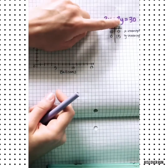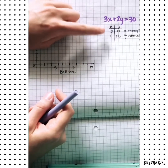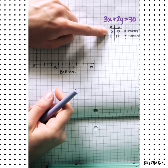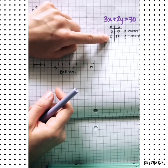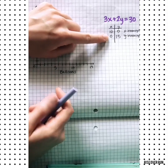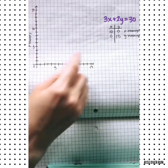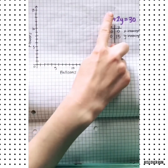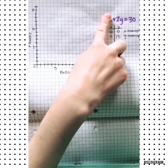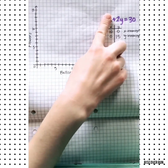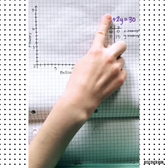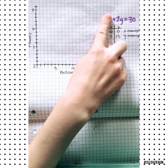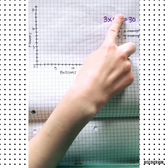So we plugged in 0 for Y to find the X intercept, and we plugged in 0 for X to find the Y intercept. You might also notice that if you just cover up a term, you can probably do mental math to figure out that the Y intercept is 15 and the X intercept is 10.